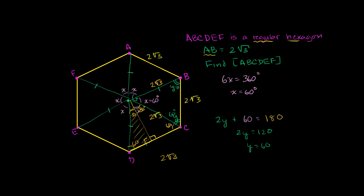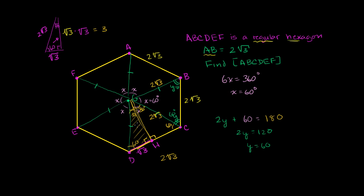The altitude splits the base in half, so the half-base DH is the square root of three. This gives us a 30-60-90 triangle. We need the altitude height. In a 30-60-90 triangle, the side opposite 60 degrees equals the square root of three times the side opposite 30 degrees. So the height is square root of three times square root of three, which equals 3. The altitude is 3.